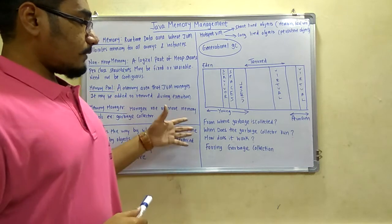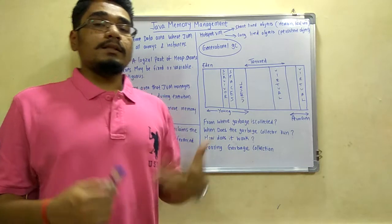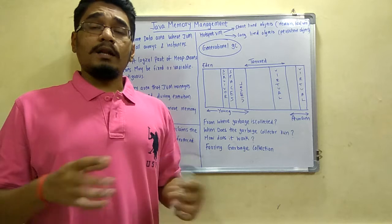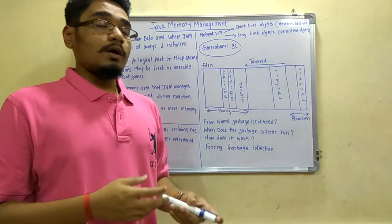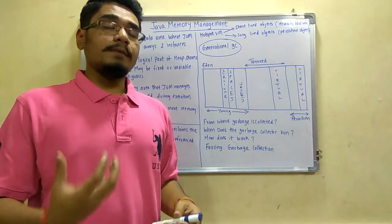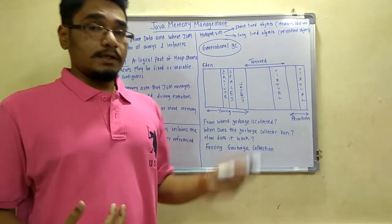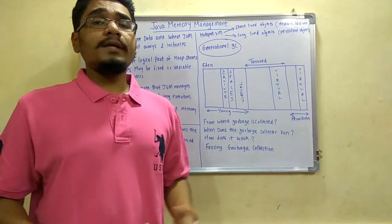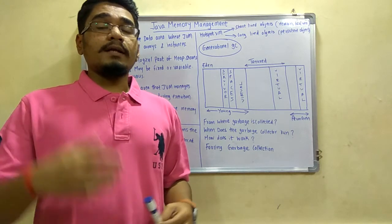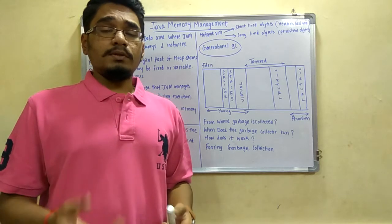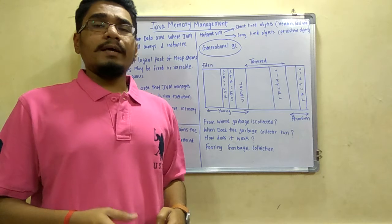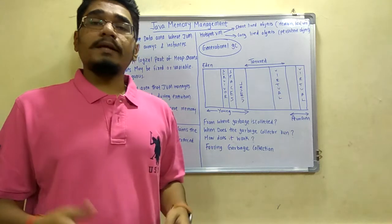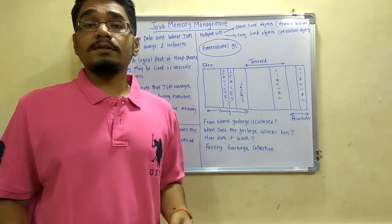Now let us look at some questions about garbage collection. First, from where is the garbage collected? The garbage is usually collected from the heap memory, since the heap is where all the objects are allocated and referenced. Second, when does the garbage collector run? There is no guarantee of when the garbage collector will run — it fully depends upon the JVM. Even if you fire a request to run GC right now, it cannot be guaranteed it will run in the next few seconds. It is on JVM's terms, not the user's.